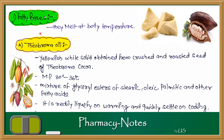Fatty bases melt at body temperature. The melting point is about 37 degrees. Now let's talk about theobroma oil. Theobroma oil is a yellowish white solid obtained from crushed and roasted seeds of Theobroma cacao. The melting point is about 30 to 36 degrees. It is a mixture of glycerin, stearic acid, oleic acid, palmitic acid, and other fatty acids.